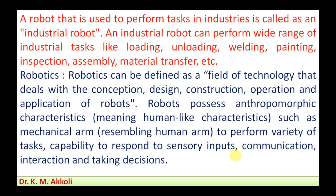Now we will see where robots are used. A robot that is used to perform tasks in industries is called an industrial robot. An industrial robot can perform a wide range of industrial tasks like loading, unloading, building, printing, inspection, assembly, material transport, and so on.